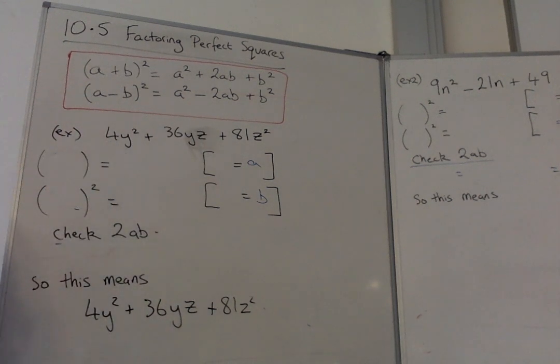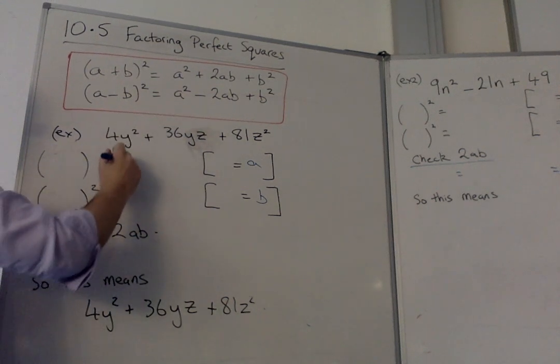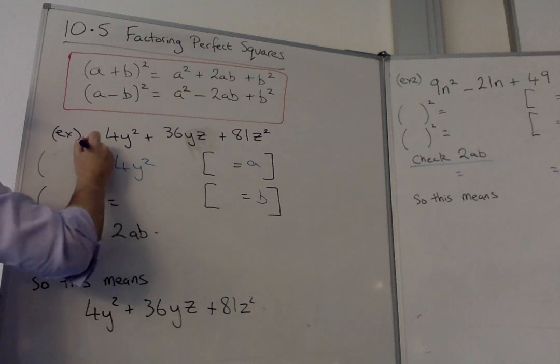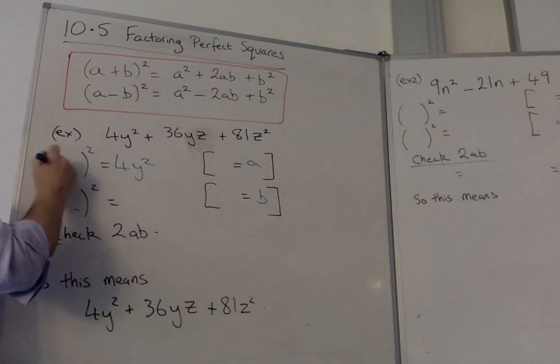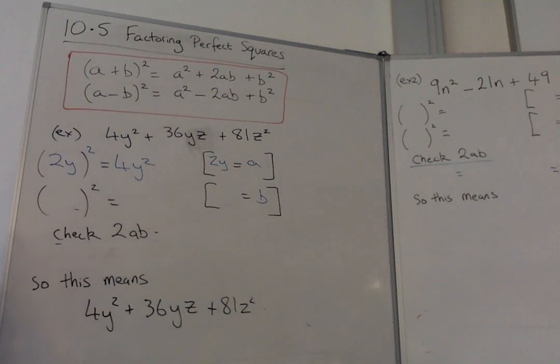So this must have been the a² part. So what was that square rooted? 2y. So this means this is a perfect square and we know the a part is 2y.